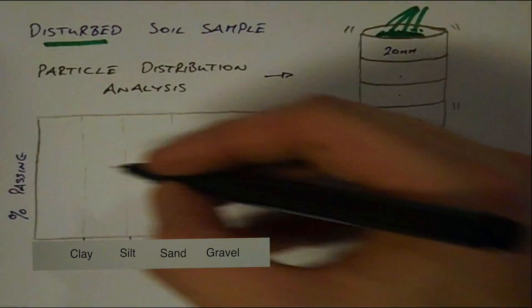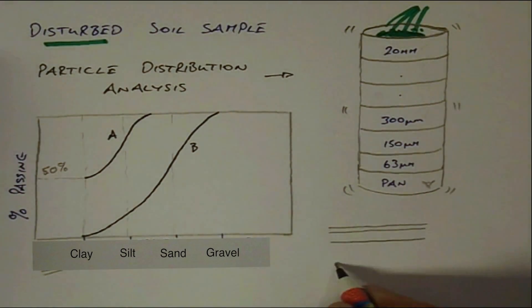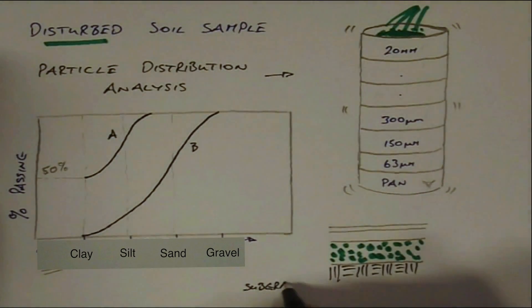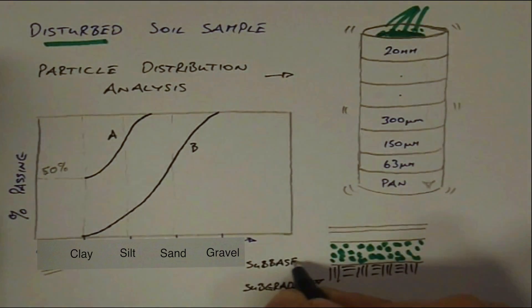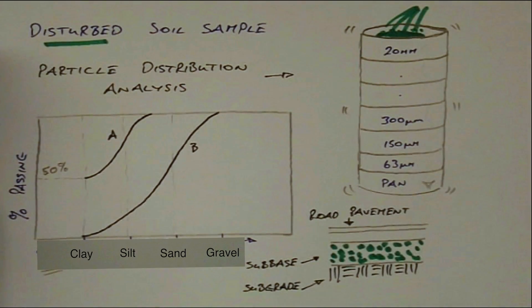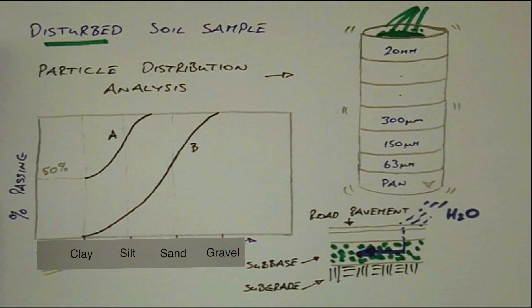For example, soil A has 50% clay sized particles and as a result is unlikely to provide the necessary free draining properties required for its use as a sub-base material in a roadway. Soil B on the other hand has no clay sized particles and is likely to allow any penetrating surface water to quickly drain away from the road pavement.